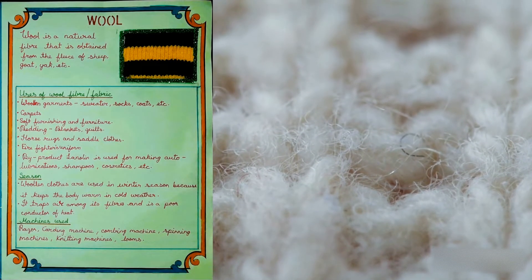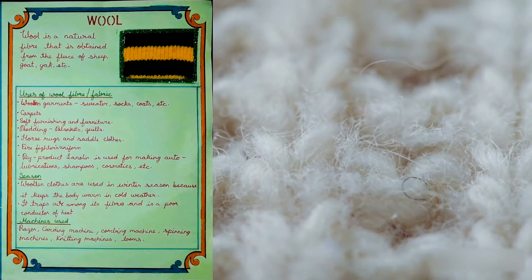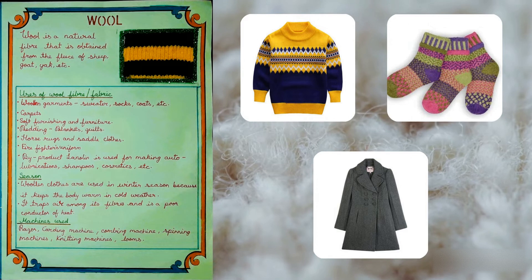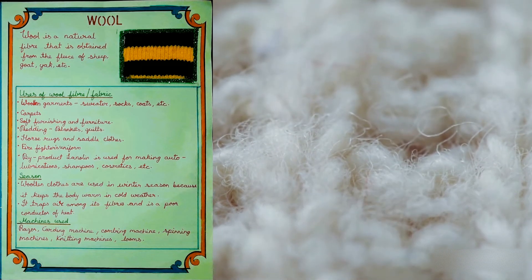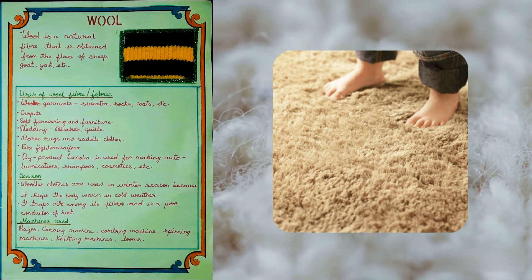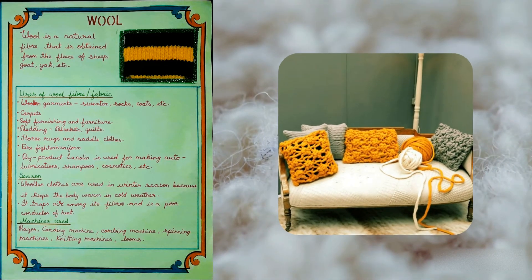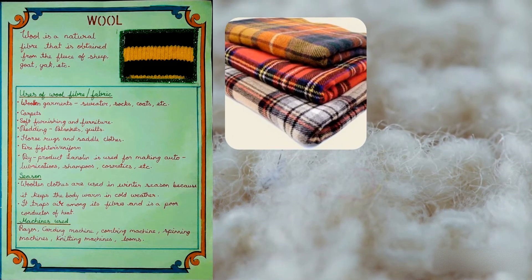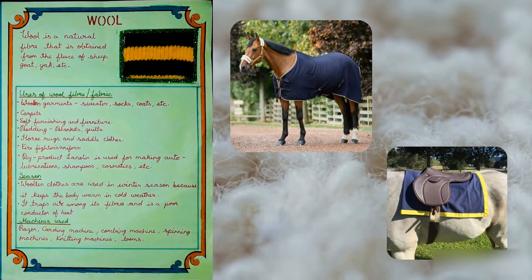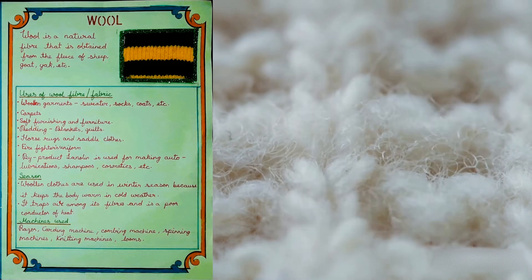Uses of wool fiber or fabric: for making woolen garments such as sweater, socks, coats, etc. Wool is also used for making carpets. It is also used for soft furnishing and furniture, for bedding such as blankets and quilts, for making horse rugs and saddle cloths, and for making firefighters' uniforms.